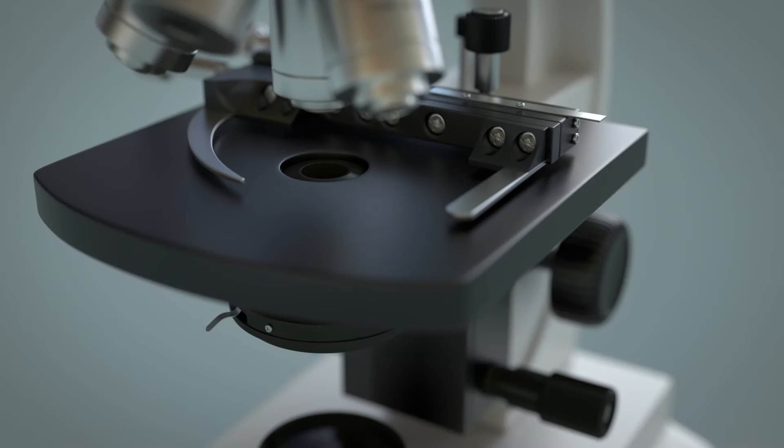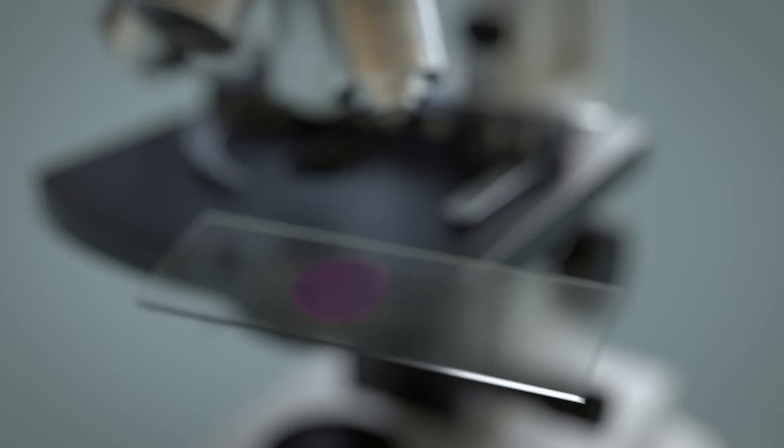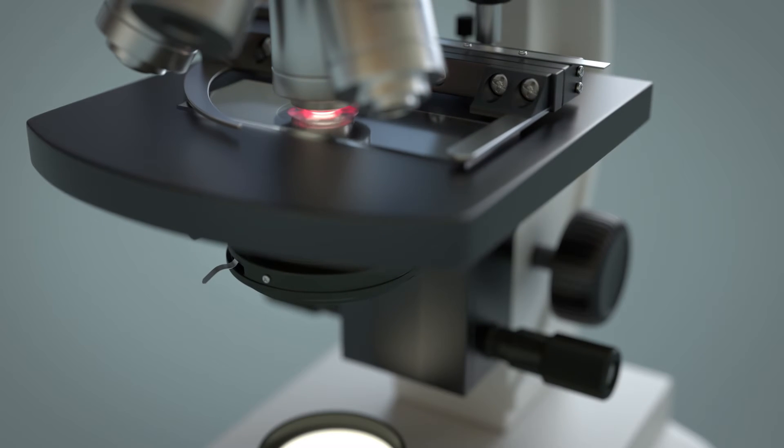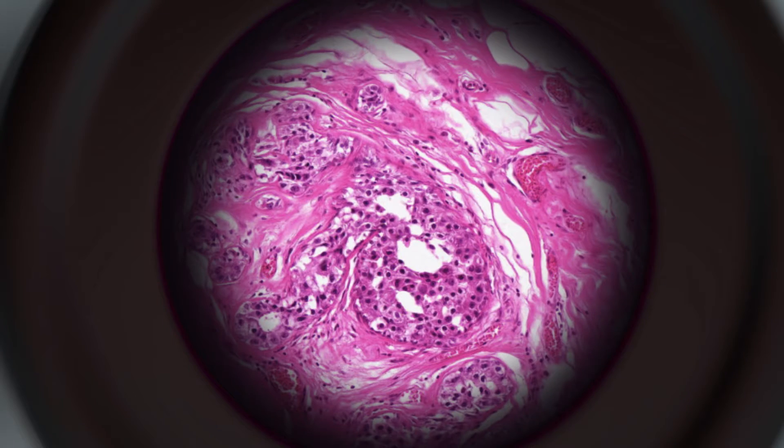For some tests, the pathologist will take thin slices of a biopsy, stain the normally transparent tissue to make structures visible, and view them under a microscope. They look for cancer and any characteristics that can provide more information about how it might behave.